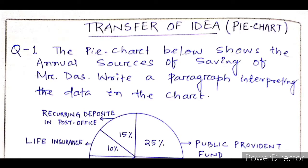Now, friends, let me tell you what I want to cover — transfer of idea, first with pie chart. So the first question is: 'The pie chart below shows the annual sources of saving of Mr. Das. Write a paragraph interpreting the data in the chart.' Mr. Das earns some income and saves it through various different sources.